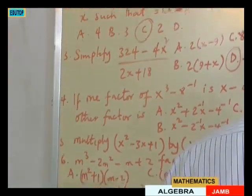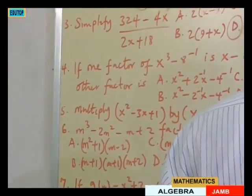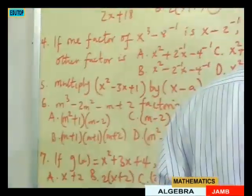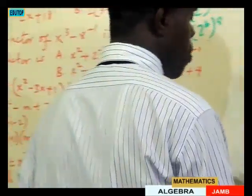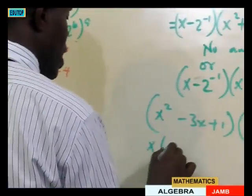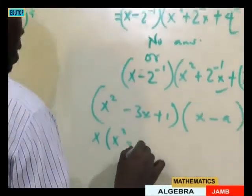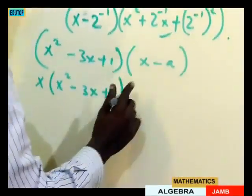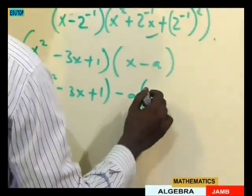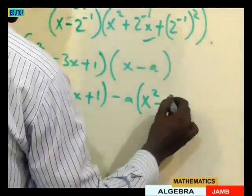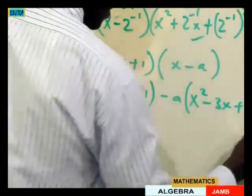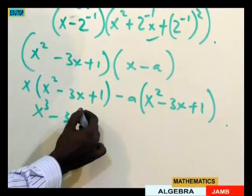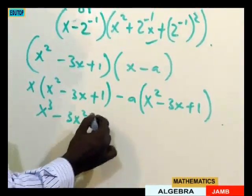We are asked to multiply x squared minus 3x plus 1 into x minus a. We open this up by taking x into x squared minus 3x plus 1, and also minus a into x squared minus 3x plus 1. This gives x cubed, minus 3x squared, plus x from the first part.